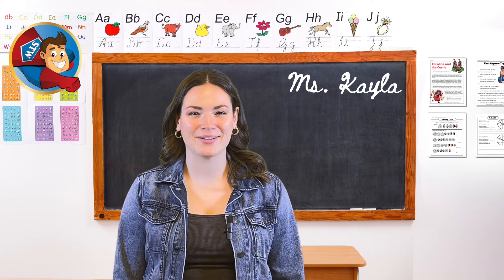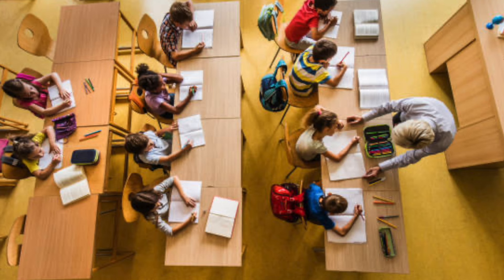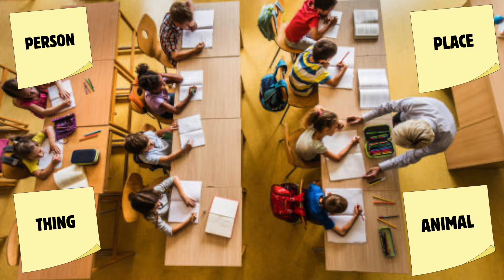Now that we've reviewed what nouns are, let's set up our game. Label each corner of the classroom with a sticky note or sign with person, place, thing, and animal. This will help us practice identifying different types of nouns.